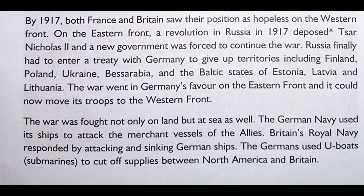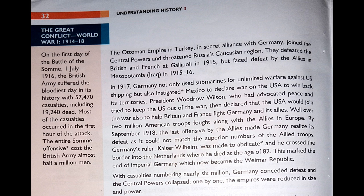Germany could now move its troops to the Western Front. The war was fought not only on land but at sea as well. The German Navy used its ships to attack the merchant vessels of the Allies. Britain's Royal Navy responded by attacking and sinking German ships. The Germans used U-boats — submarines — to cut off supplies between North America and Britain.